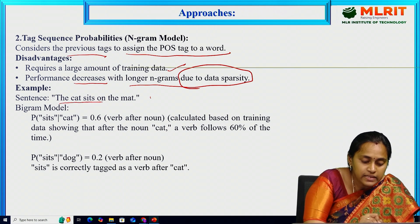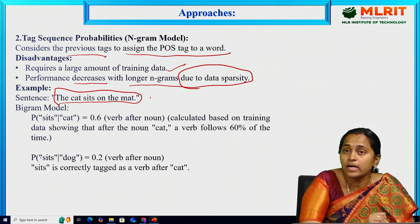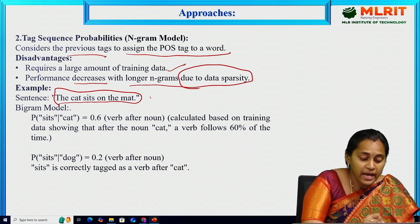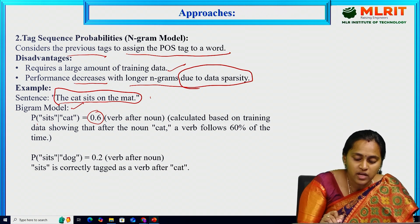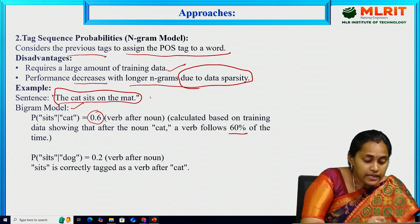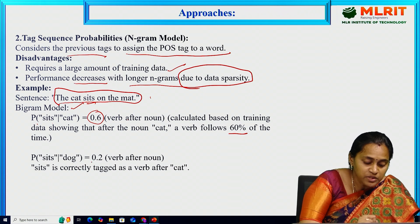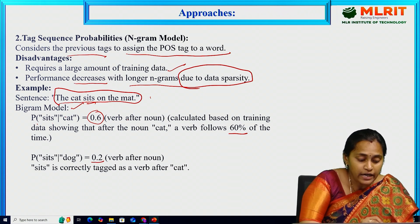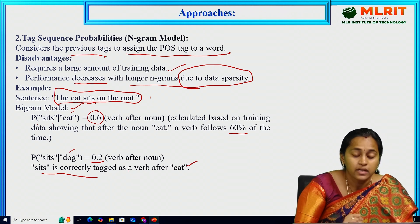For example, I am taking the sentence: 'The cat sits on the mat.' I am applying an n-gram model here — specifically the bigram model. The probability of 'sits' given 'cat' is 60 percent — verb after noun — based on that 60 percent weight. The probability of 'sits' given 'dog' is 0.2, or 20 percent. This correctly tags the verb after 'cat' and shows the variation in the bigram model.